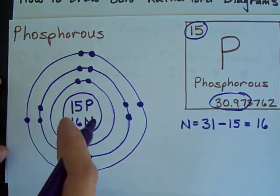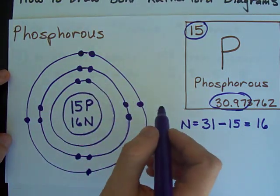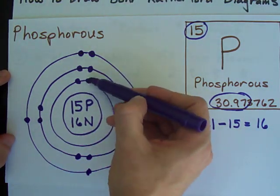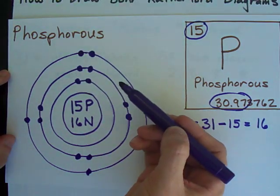This is the Bohr-Rutherford diagram for phosphorus. One small note is that you can fit two in the first one, eight in the next one, eight in the next one after that.